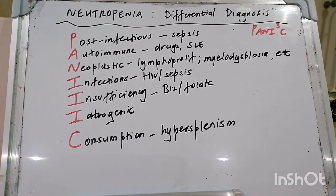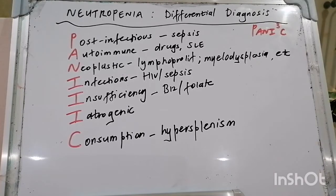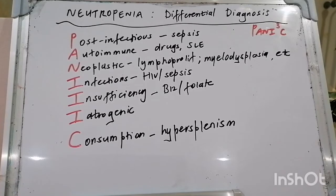How do we investigate neutropenia? Basic investigations include a full blood count with differential and a blood smear to confirm the diagnosis. Check renal function, liver function, and coagulation studies — PTT and INR. Special workup includes fibrinogen levels, lactate dehydrogenase, antinuclear antibodies to search for lupus, and B12 and folate levels for deficiency. A bone marrow biopsy may sometimes be needed.